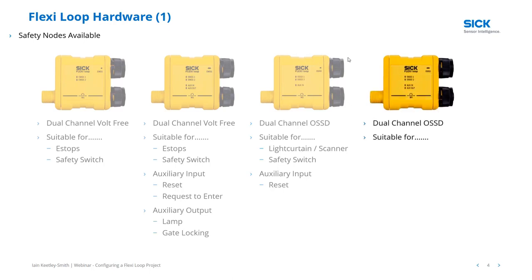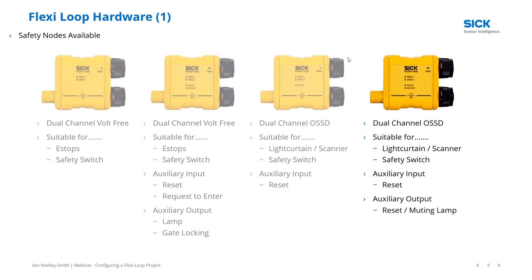The last safety node is also dual-channel and suitable for OSSDs, but has 8 cores going to the top-right device connector. It's suitable for light curtains, laser scanners, and safety switches. With the auxiliary input and output, the auxiliary output could be used for a reset or muting lamp, and also for gate locking — for example, SICK's magnetically locking gate switch with OSSD outputs. This gives you a selection of nodes depending on what devices you want to connect onto your FlexiLoop.